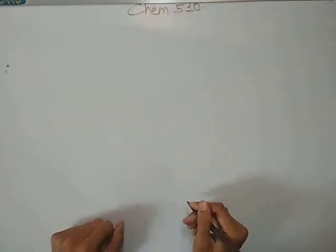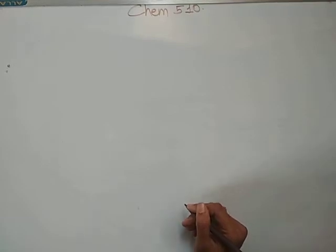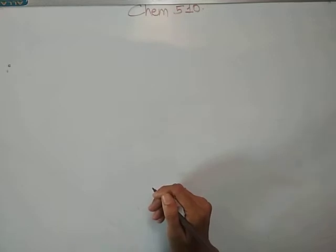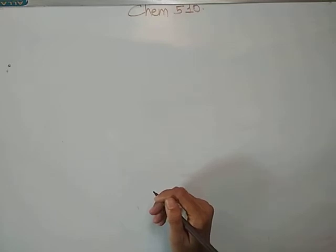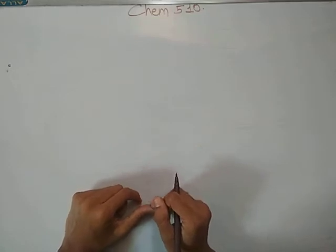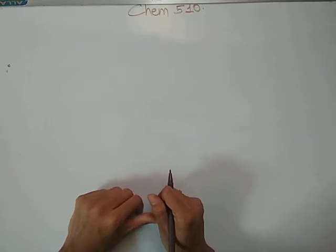Hi, welcome back to our YouTube channel Chem 510. In the previous video, I studied what delocalization energy is and how you can calculate delocalization energy with one simple example: cyclopropyl anion, cation, and radical. But in this video, we will discuss the calculation of delocalization energy of cycloheptatriene radical, cycloheptatriene anion, cycloheptatriene cation, and its stability.